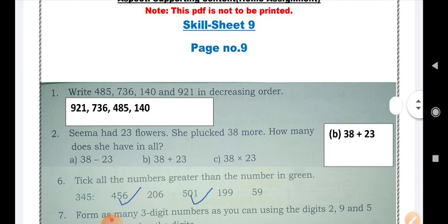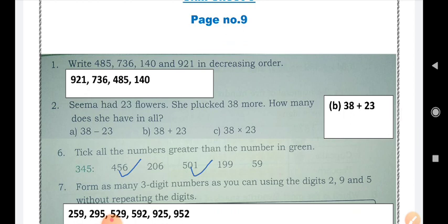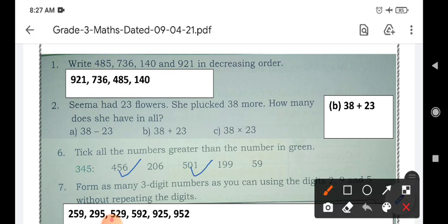Question 1, write 485, 736, 140 and 921 in decreasing order. Dear students, you all know, in decreasing order, we have to start from greatest number to smallest. Which is the greatest number among these 4? The greatest number is 921. These all numbers are 3 digit numbers having 1s, 10s, 100s place value.